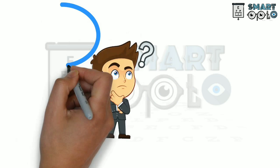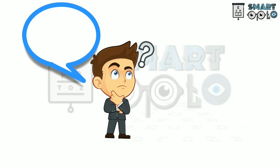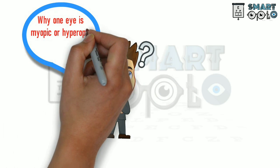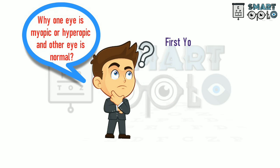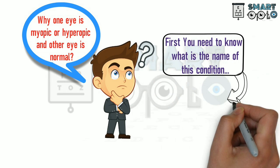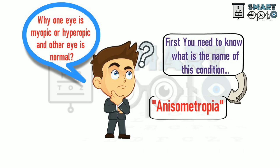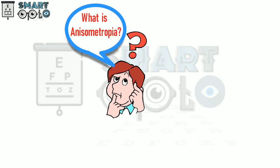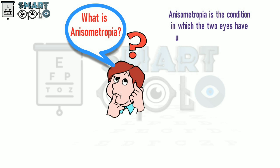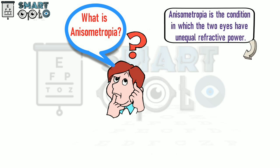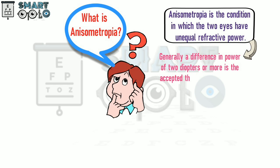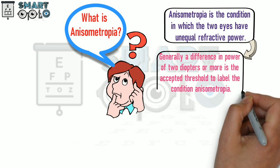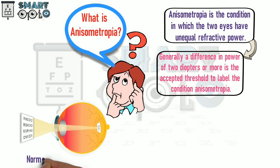Hello viewers, today in this video you will come to know about why one eye is myopic or hyperopic and the other eye is normal. First you need to know the name of this condition — it is called anisometropia. Anisometropia is the condition in which the two eyes have unequal refractive power. Generally, a difference in power of two diopters or more is the accepted threshold to label the condition of anisometropia.